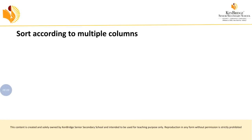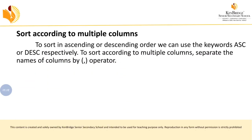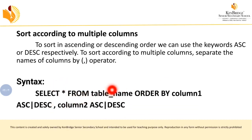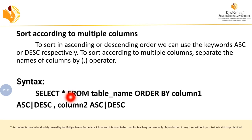Now we are going to see about multiple columns. For sorting multiple columns, you use the same syntax but separate columns with a comma. The syntax is: SELECT * FROM table_name ORDER BY column1 ASC/DESC, column2 ASC/DESC. You can mention as many columns as needed, separating them with commas.